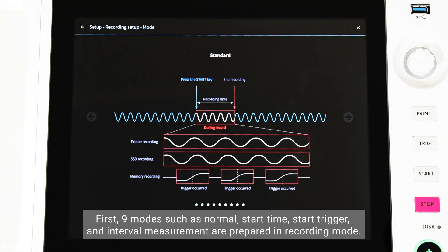First, nine modes such as normal, start time, start trigger, and interval measurement are prepared in recording mode.